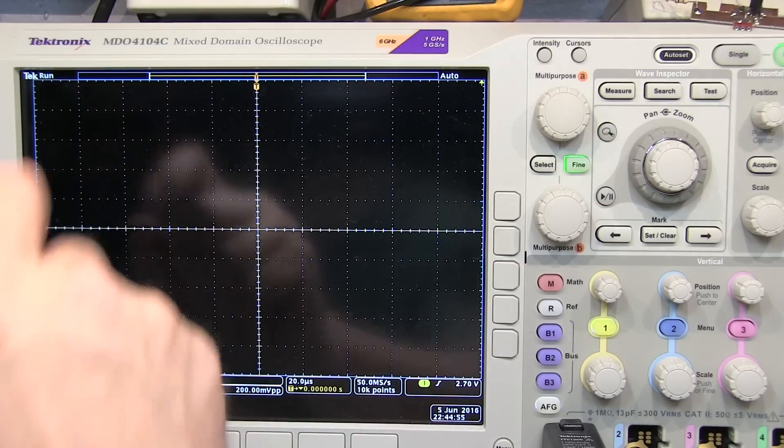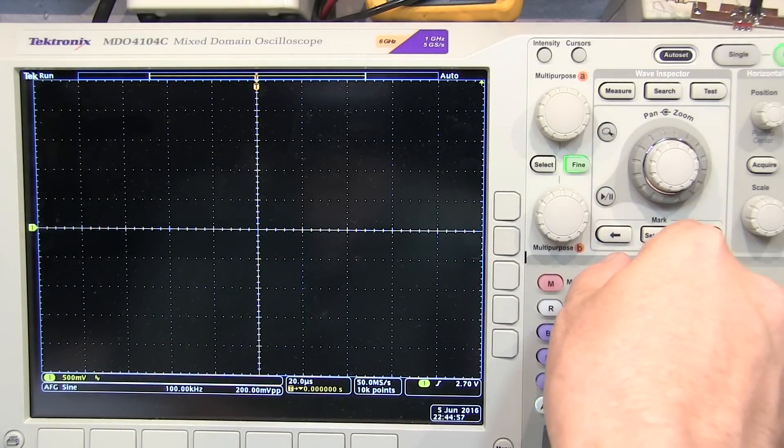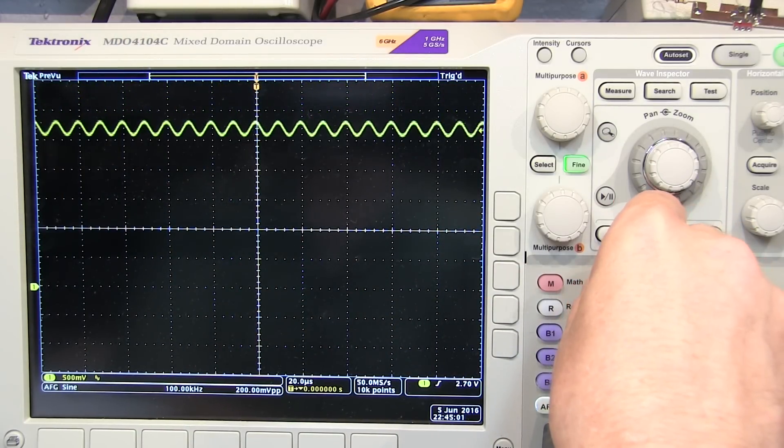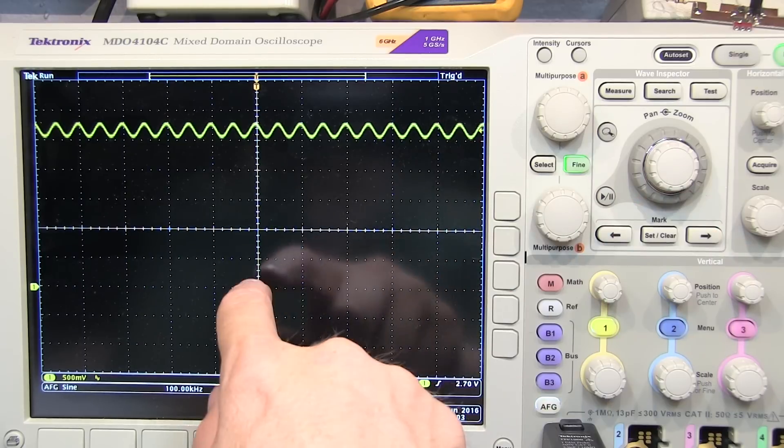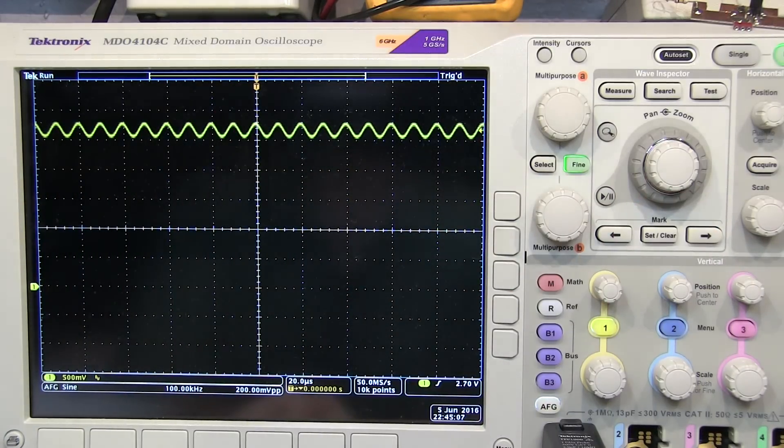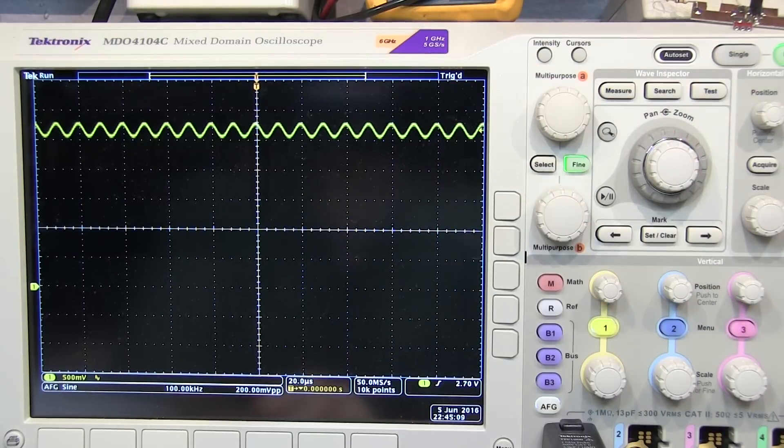So my signal is sitting just above the top of the screen. So I need to move my vertical position control down, so I can bring my signal back on again. So now at 500 millivolts per division, I can now see my signal riding on top of that 2.7 volt bias, and it appears twice as big.